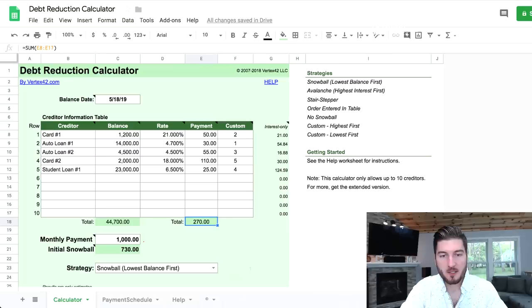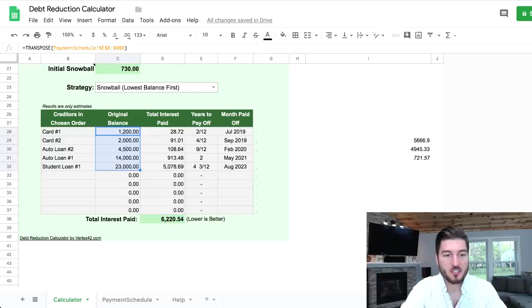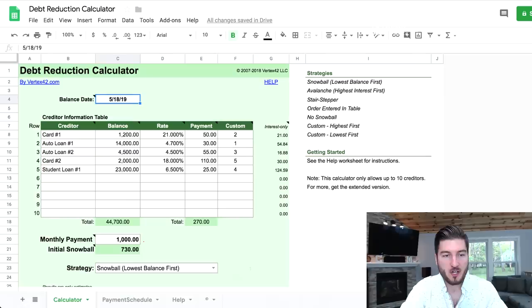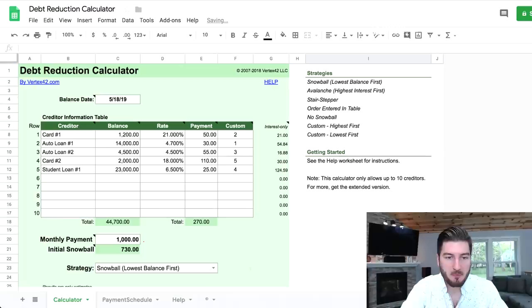Now if we click on debt snowball down here, you'll see that it automatically arranges all of our debts from smallest to largest. We had that credit card with $1,200, the other credit card with $2,000, the auto loan, the student loan, etc. It ultimately tells you how much interest you paid, how long it took you to pay it off, and when you pay it off. I'm going to write down this number right here: the total interest paid, which is $6,220.54. I'm going to use these same exact numbers, except we're going to click on the debt avalanche.